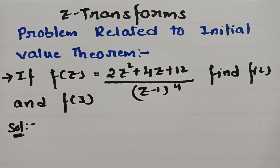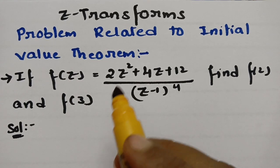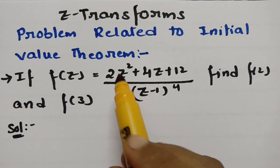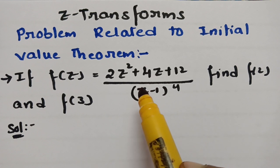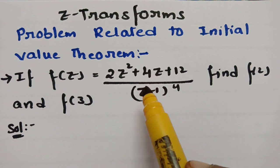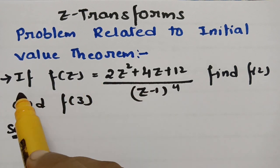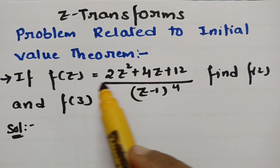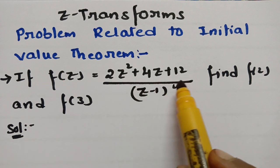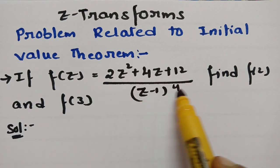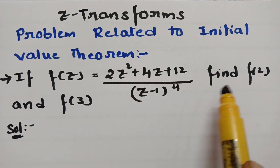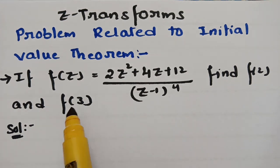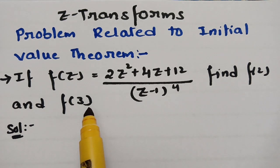This video is based on problems related to the initial value theorem. Here is the question — this is the most important question. We have to solve: if F(z) is equal to (2z² + 4z + 12) / (z - 1)⁴, and we have to find out the values of f(2) as well as f(3).